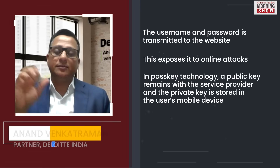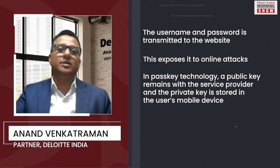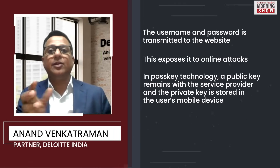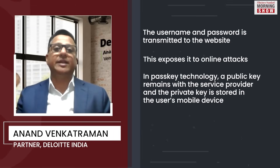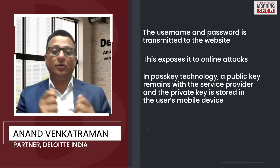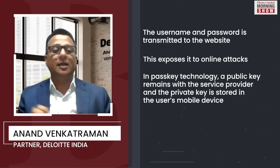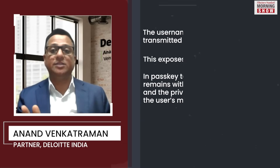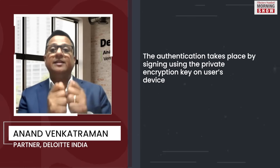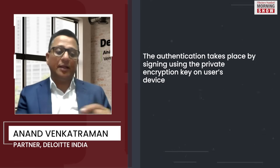What typically happens with a password is that we put in a username and then a password, which is then sent to the end service — which could be an application or a banking application. Typically, when phishing happens, they divert and take that username and password, and then use it on the legitimate side. In case of a passkey, once you are registered using your mobile phone or any other device, there is a public key encryption that stays with the service provider and the private key is stored within your mobile. Nobody else has your mobile. What happens is, by way of a challenge — it could be a QR code that needs to be scanned — it basically validates that you have your mobile phone with you. And that answer or QR code which is scanned is signed or encrypted with your private key.